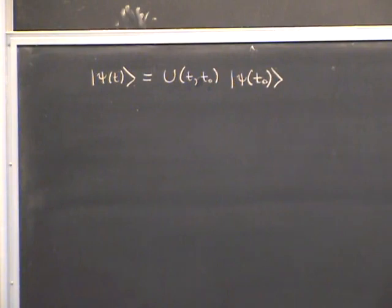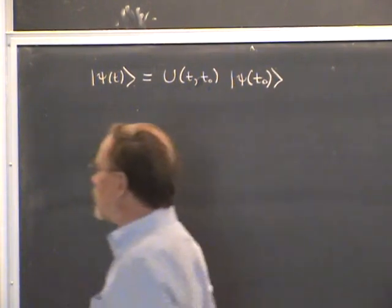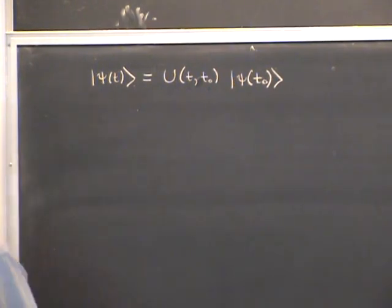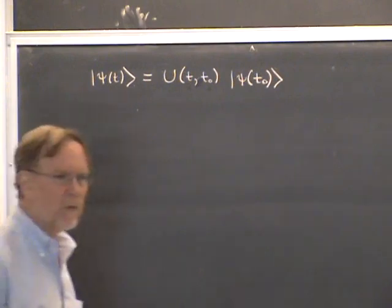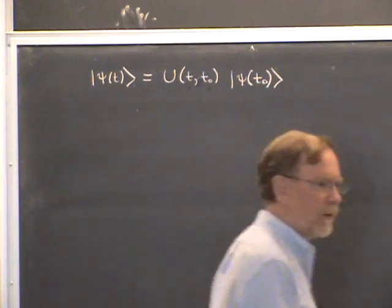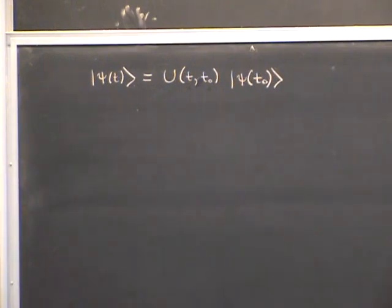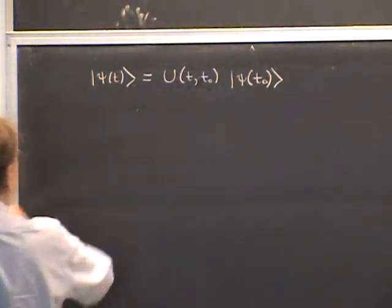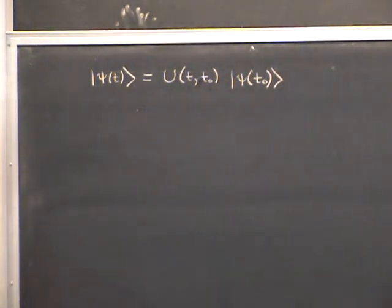It's a convenient way of ordering the two times. This is a postulate — you can add it to the other postulates of quantum mechanics we've talked about so far. In other words, it's to be confirmed by experiment.